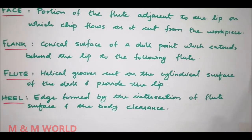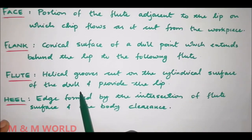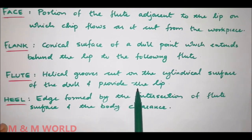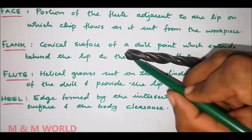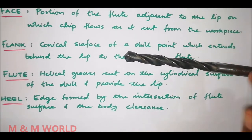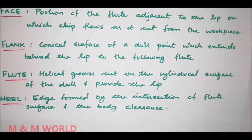Next is the flute. It is the helical groove cut on the cylindrical surface of the drill, and it provides the lip. Here we have two helical grooves, so two flutes. The functions of the flutes are: to cause the chips to curl, to allow the chips to escape, to form the cutting edges on the point, and also to permit the cutting fluid to reach the cutting edge.